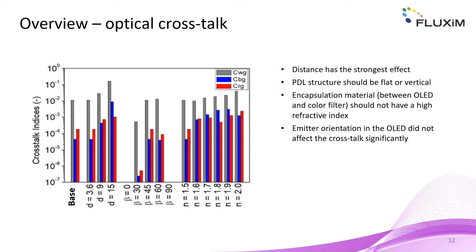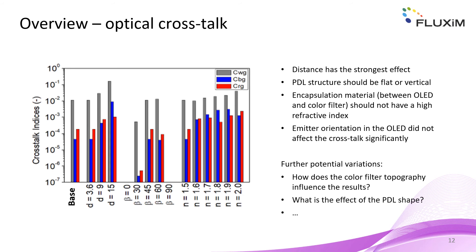In summary, the OLED to color filter distance has the strongest effect on the optical crosstalk. The PDL slope should avoid angles in the range between 45 and 60 degrees. The refractive index should also be considered; for our situation it seemed favorable to use a lower refractive index material. The dipole orientation in the OLED did affect the overall emission but did not have a negligible effect on the crosstalk index. In future studies, we could also consider the effect of the color filter topography or differently shaped PDLs.